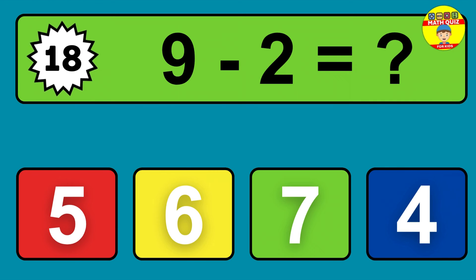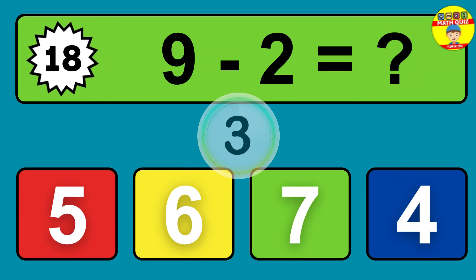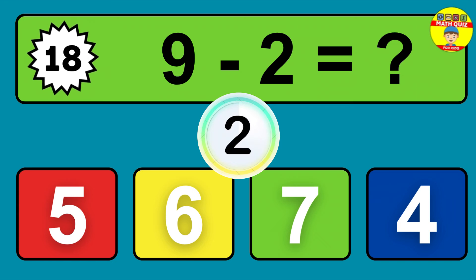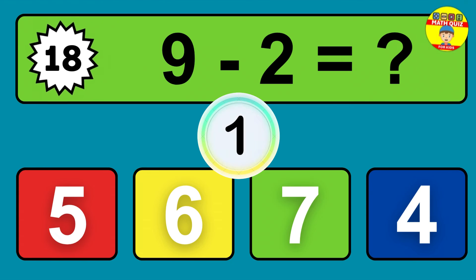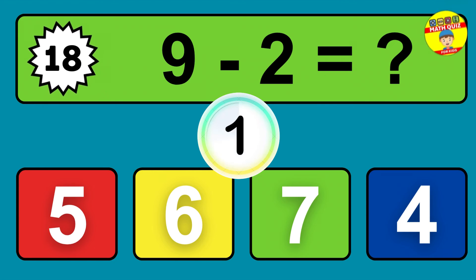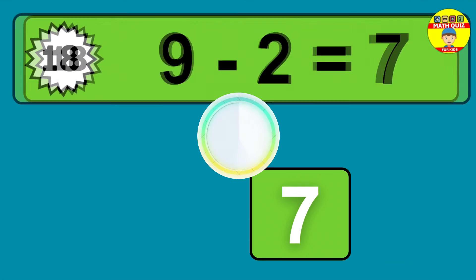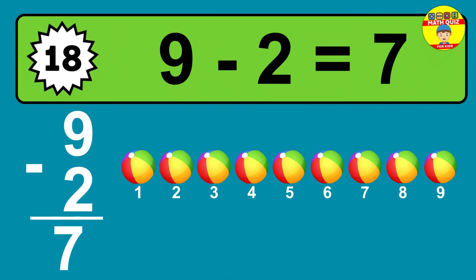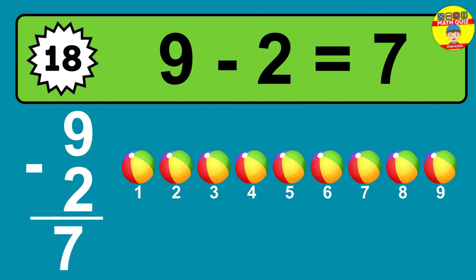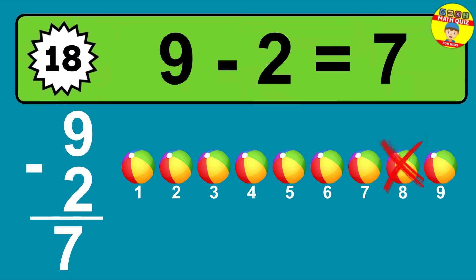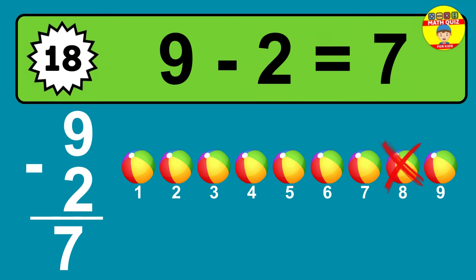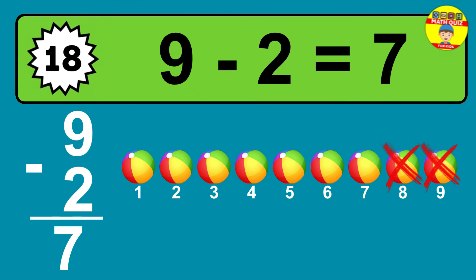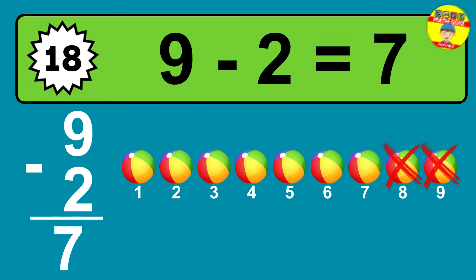Question eighteen: nine minus two equals what? The answer is nine minus two is seven. Let's count it: one, two, three, four, five, six, seven.